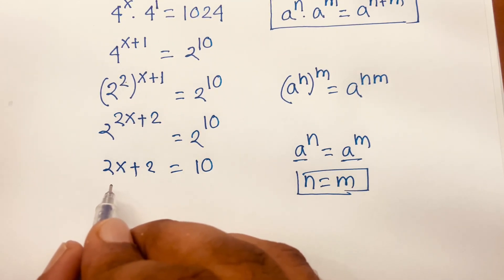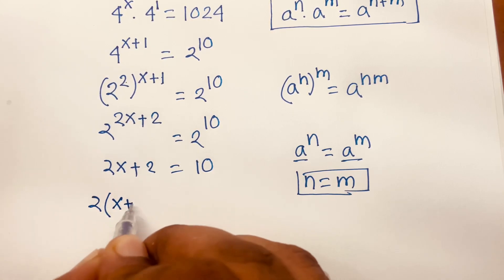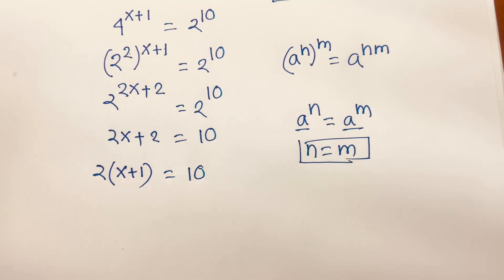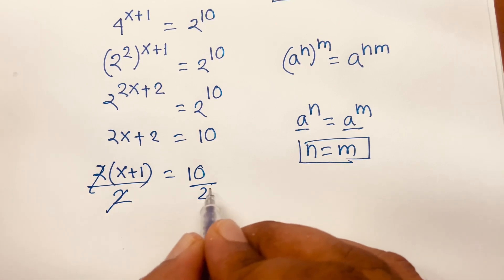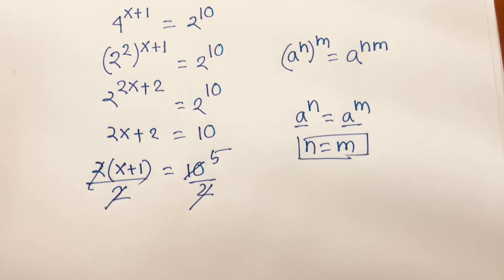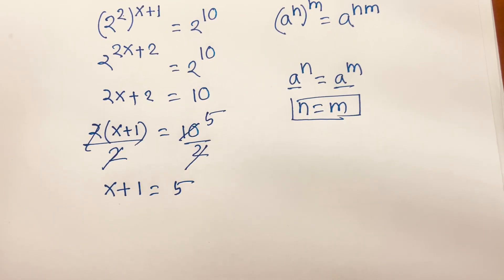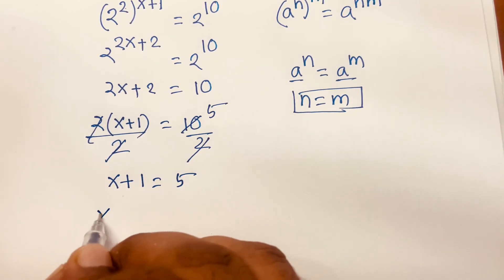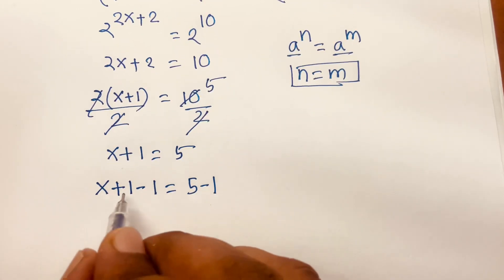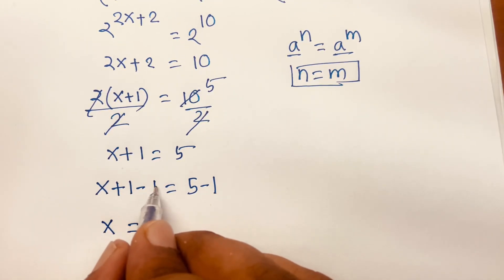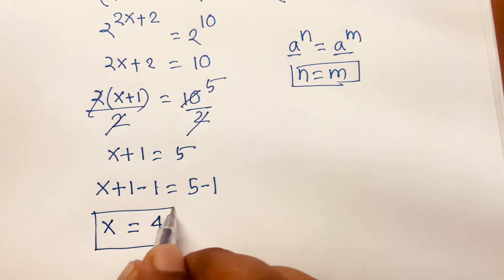We factor out 2 on the left: 2 times the quantity x plus 1 equals 10. Dividing both sides by 2, we get x plus 1 equals 5. Subtracting 1 from both sides gives x plus 1 minus 1 equals 5 minus 1, so x equals 4. That is our final answer.